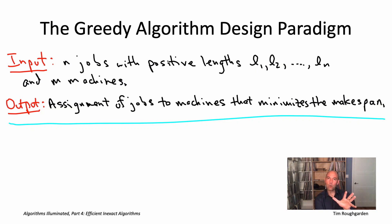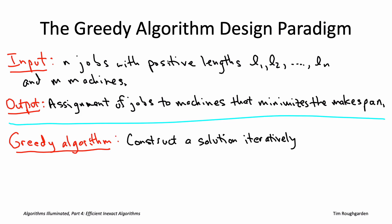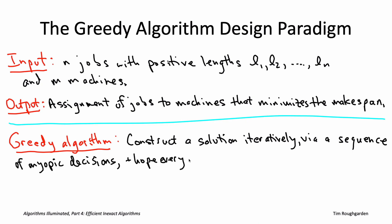The philosophy in designing a greedy algorithm is you construct a solution iteratively, piece by piece, via a sequence of myopic decisions, and then you hope that everything works out in the end. In previous books in this series, by 'works out in the end' we meant that hopefully you correctly solved the problem, like Dijkstra's algorithm or Prim's algorithm. In this part, with NP-hard problems, we're going to be hoping to be reasonably close to a best possible solution.